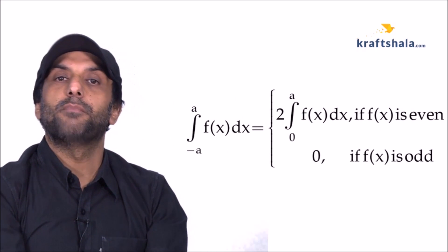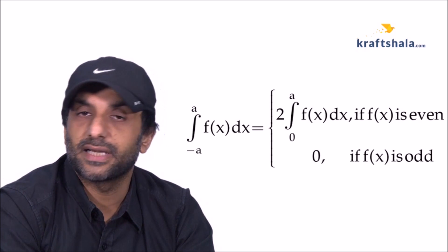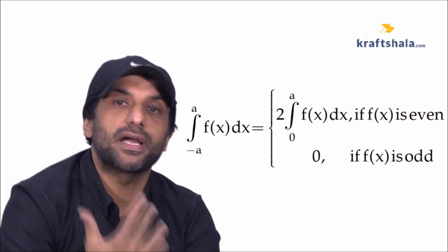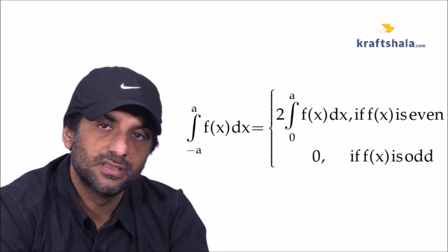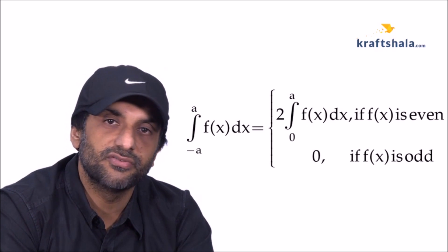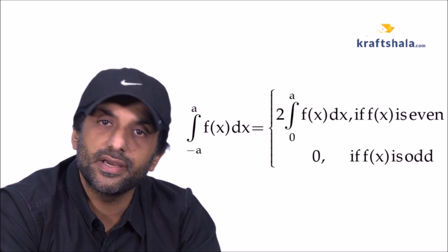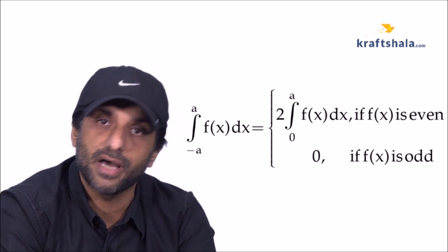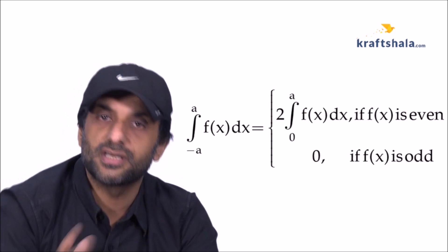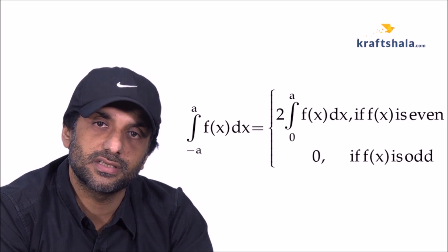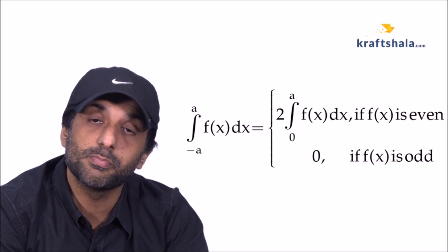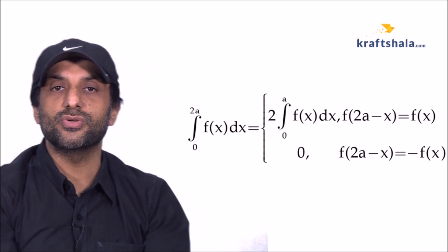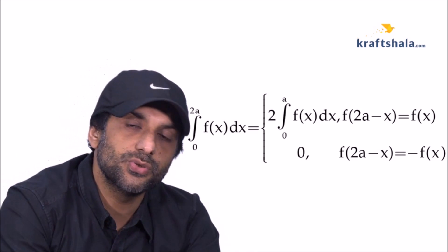The next property deals with limits from −a to a, and it relates to even and odd functions. Whenever the limits are −a to a, check whether the function is even or odd. If f(−x) = f(x), it is an even function and the integral equals twice the integral from 0 to a of f(x) dx. If f(−x) = −f(x), it is an odd function and the integral equals 0.